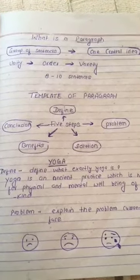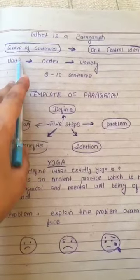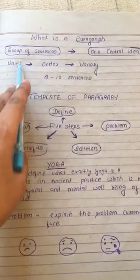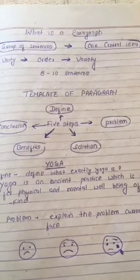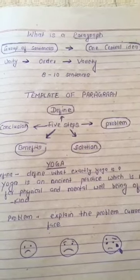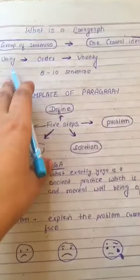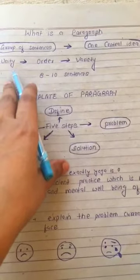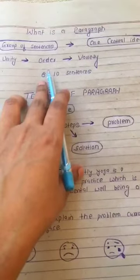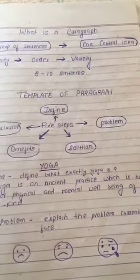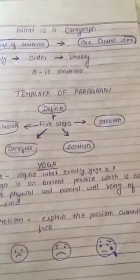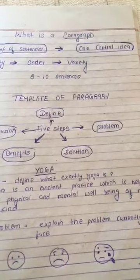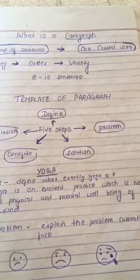So, what is a paragraph? It's a group of sentences. A paragraph has a central idea — that means the group of sentences is logically connected with each other, and it must have unity. Secondly, sentences must be in a proper order, not a random order, and there must be variety in the sentences — that is, it should not sound monotonous.